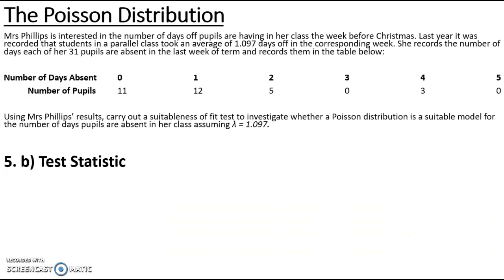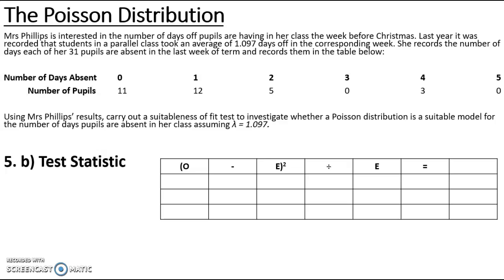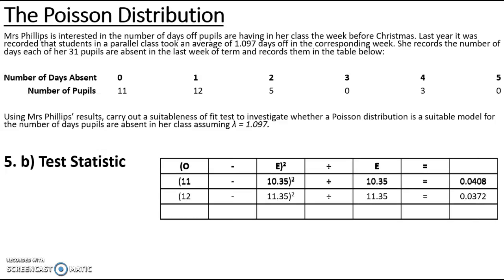Part b is to work out the test statistic using (O minus E) squared divided by E for each category. For zero days absent: observed 11, expected 10.35, contribution 0.0408. For one day absent: observed 12, expected 11.35, contribution 0.0372. For two or more days absent: observed 8 (adding 5, 0, 3, and 0), expected just over 9, contribution 0.1804. The total test statistic is 0.2585.